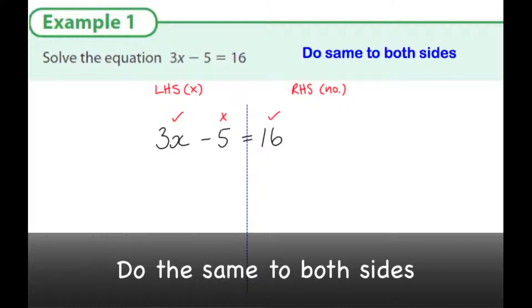So I'm happy with the 3x's on the right place. The number minus 5 is in the wrong place, and the number 16 is in the right place. So I want to get rid of the minus 5. To do this, I could just add 5 to both sides. And this is fair because I'm doing the same to both sides.